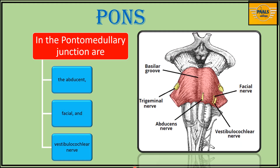Very significant on this anterior surface is the junction of the pons with the medulla, called the pontomedullary junction. At this junction we also see the emergence of three other nerves: the abducent nerve, the facial nerve, and the vestibulocochlear nerve. These three nerves emerge from the pontomedullary junction.